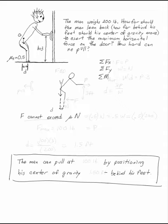The man weighs 200 pounds and is leaning back, so he can pull on that door handle as hard as he can. How hard can he pull, and how far back does he lean?